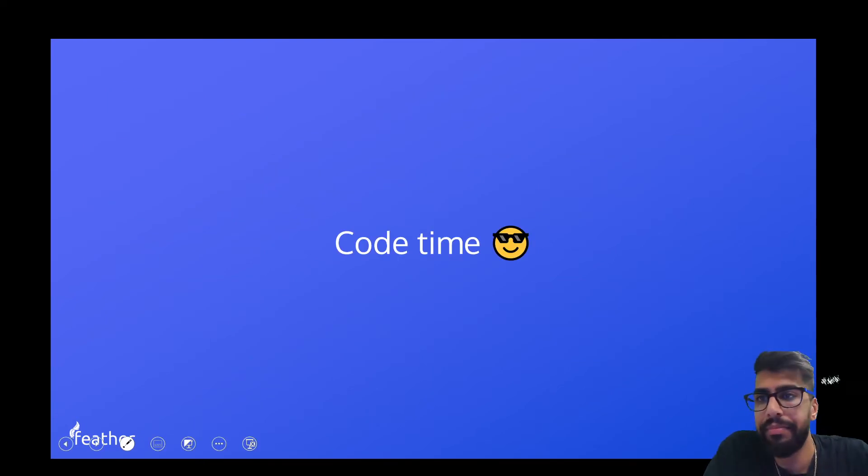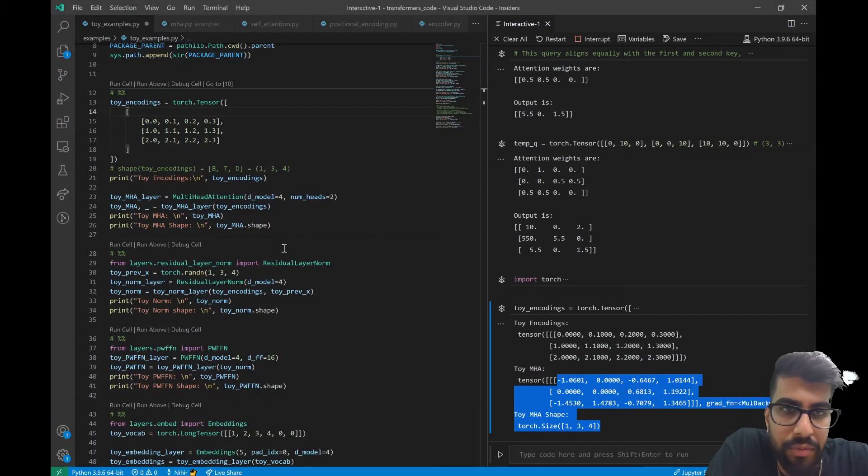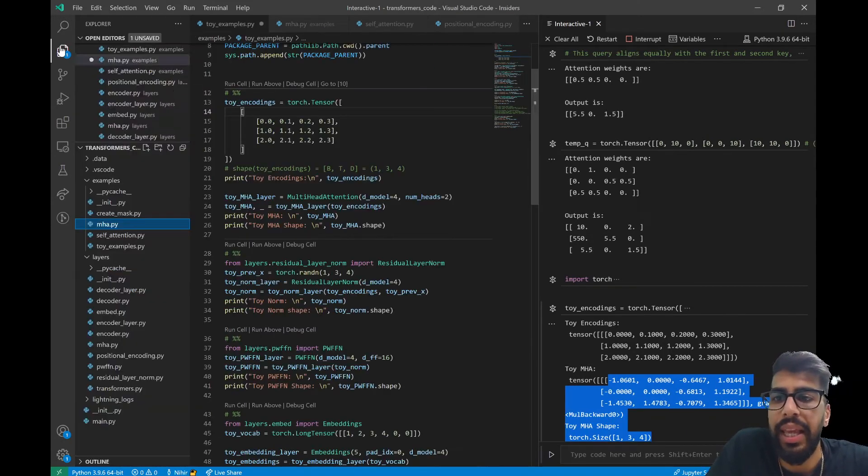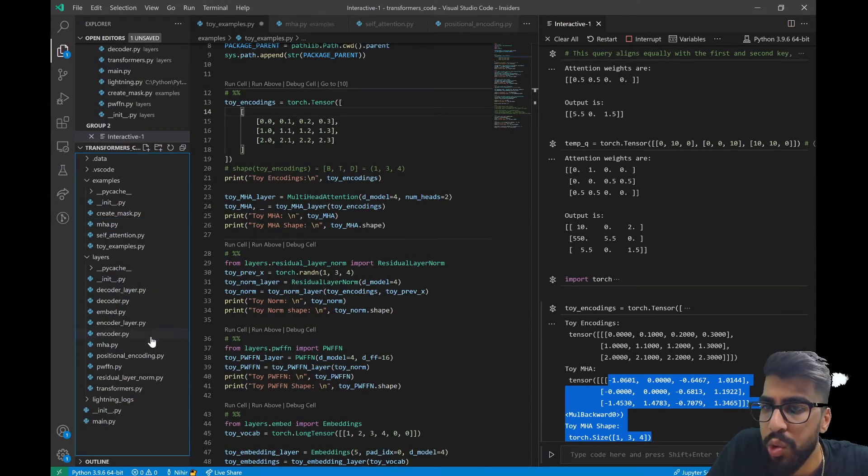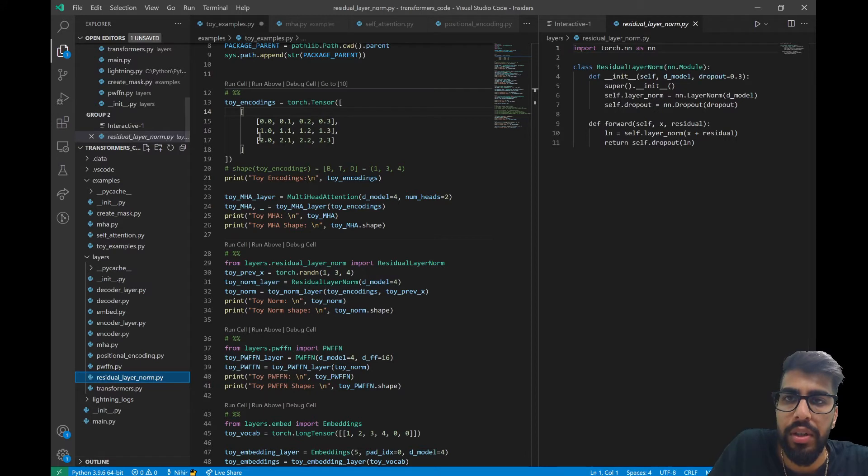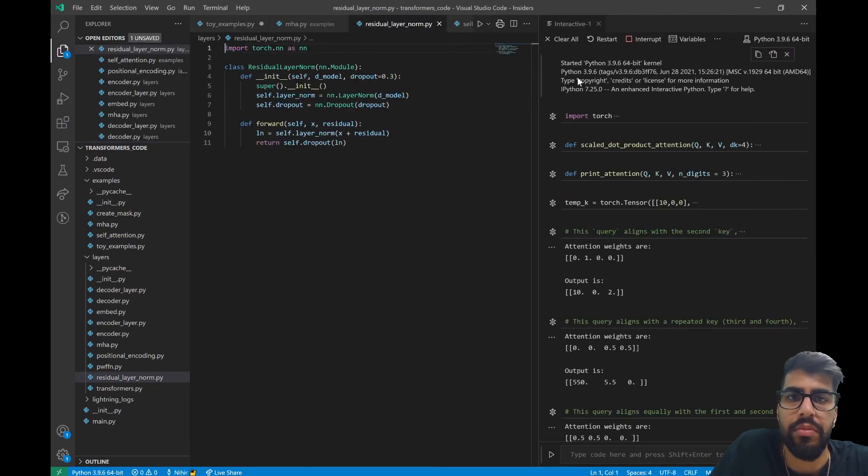Okay, so let's code this up. Okay, so we have our residual layer norm. And here we'll be actually in the layers. So we'll look at residual layer norm. Let's just drag that over here.